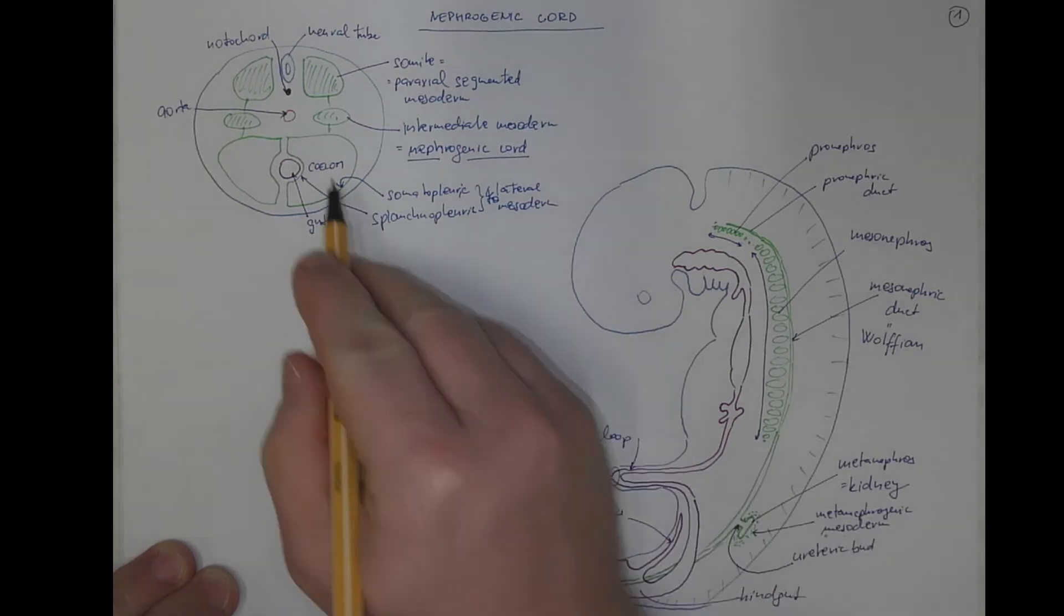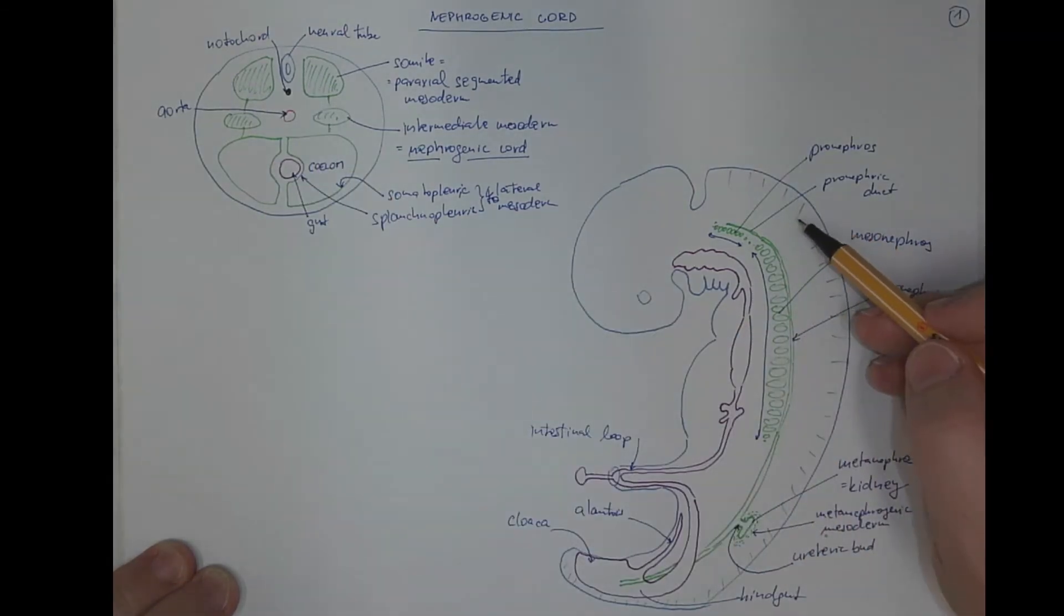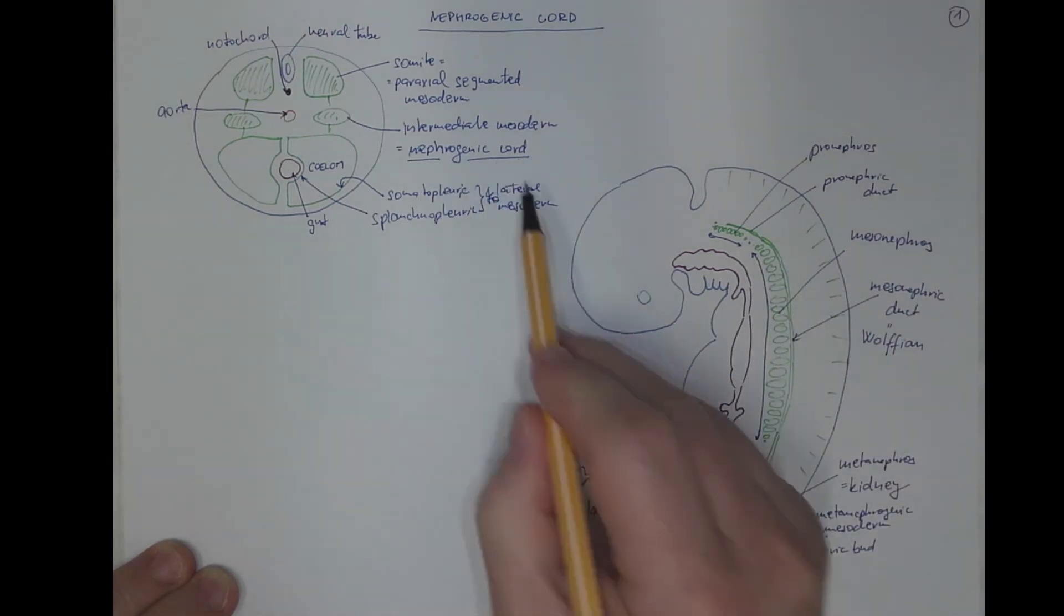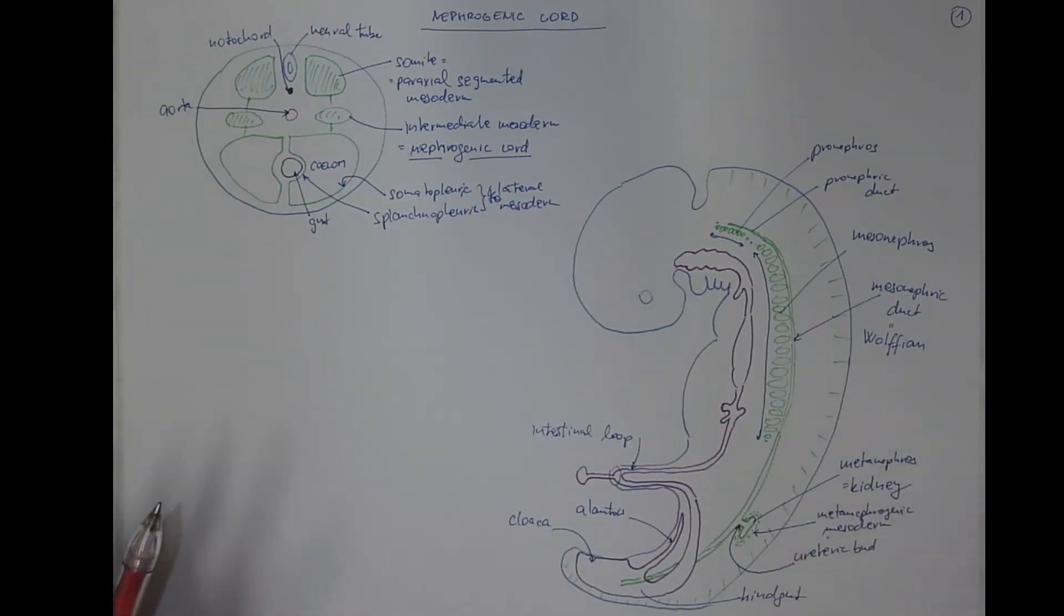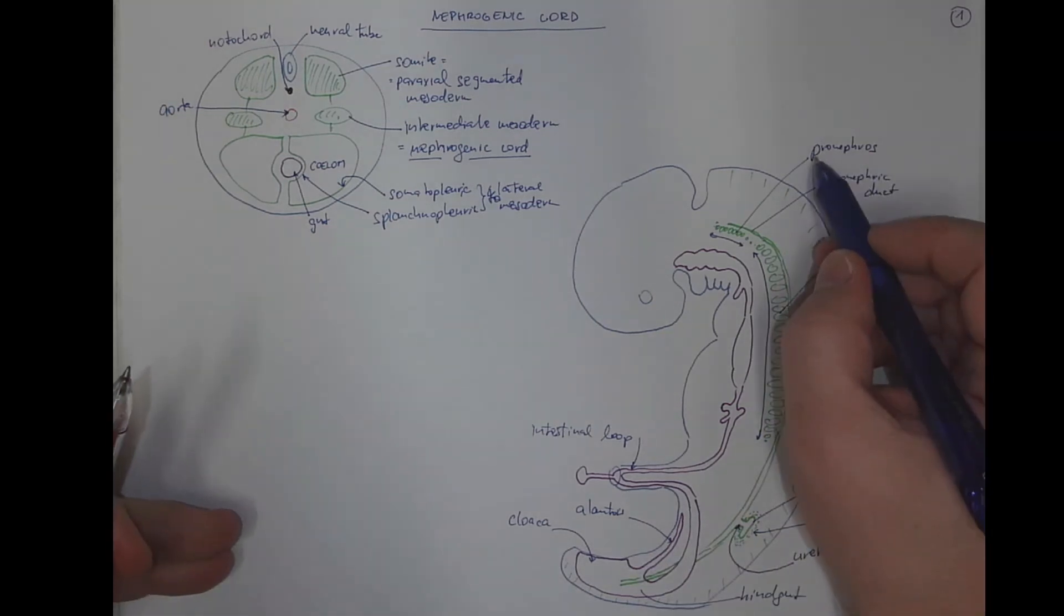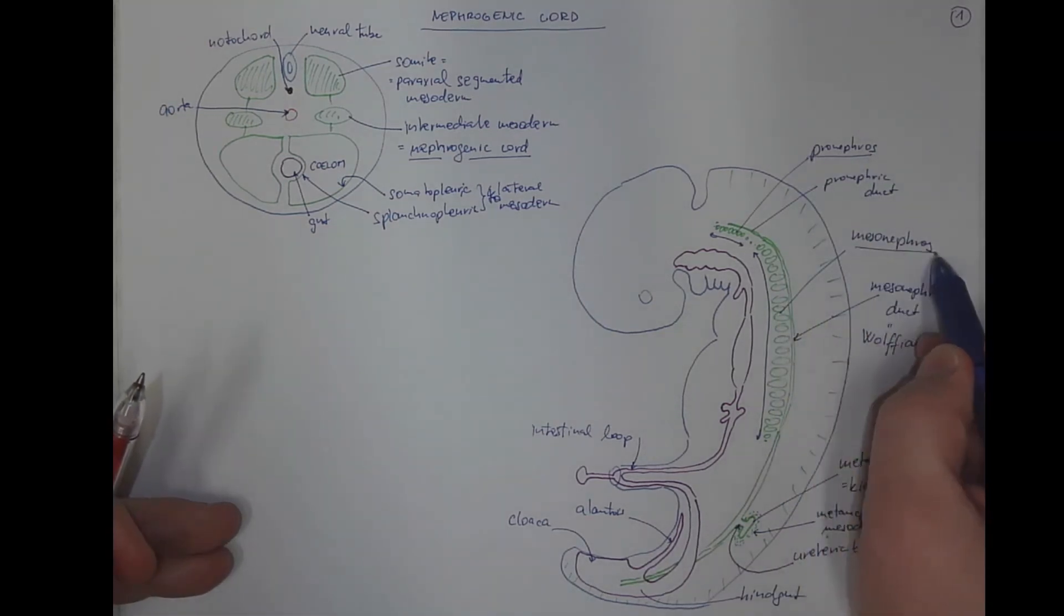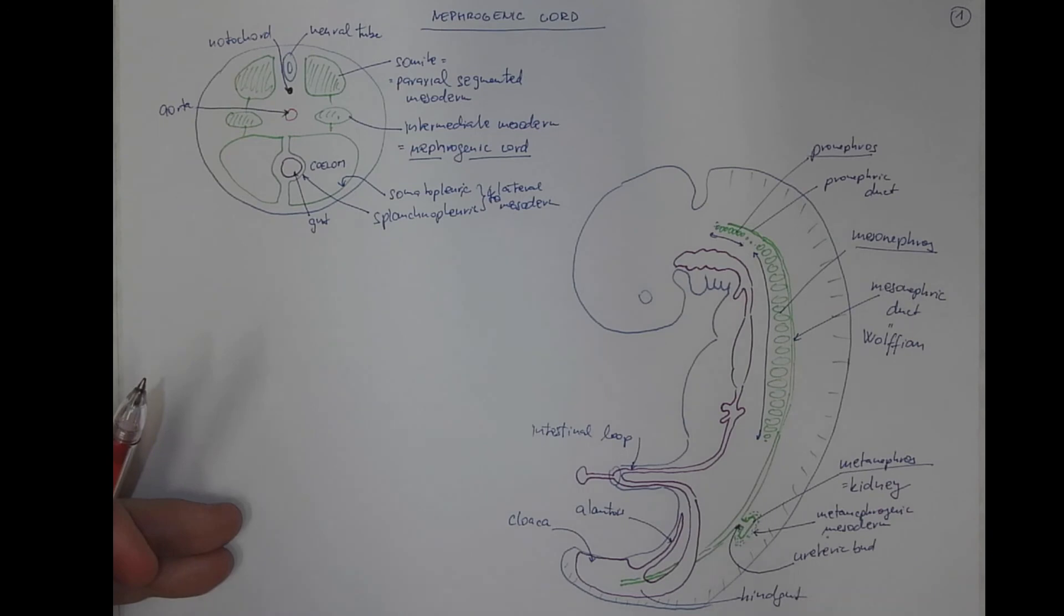Does not correlate with the segmentation of the nephrogenic cord. So the nephrogenic cord produces the pronephros, mesonephros, and metanephros.